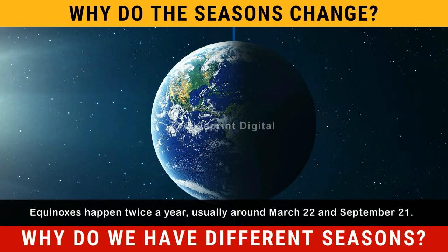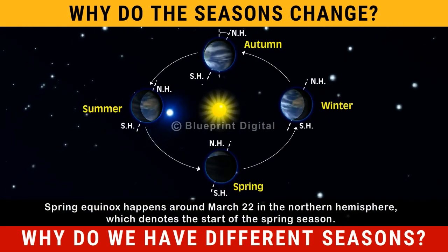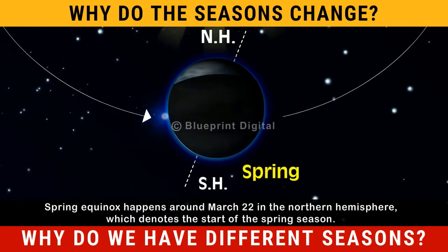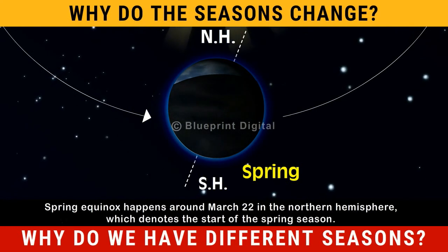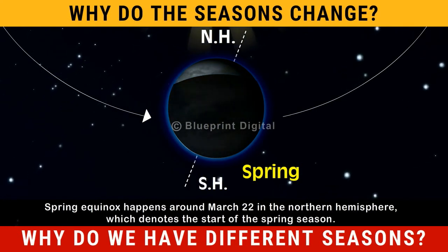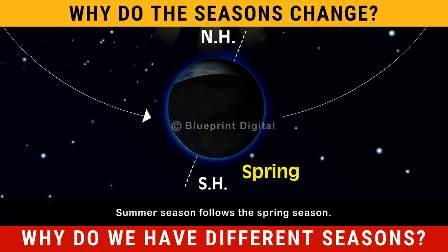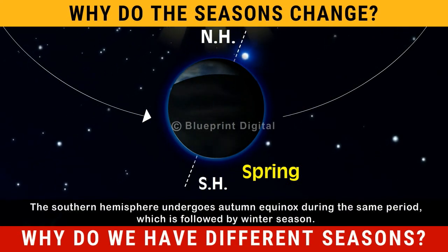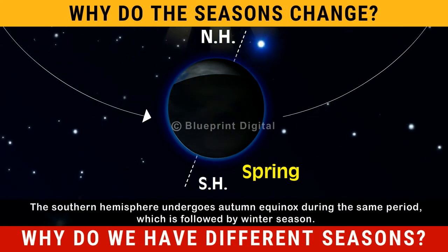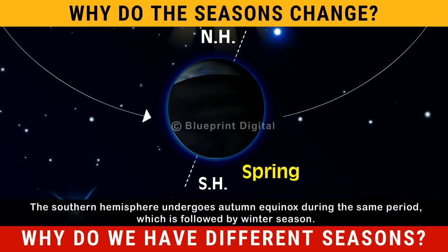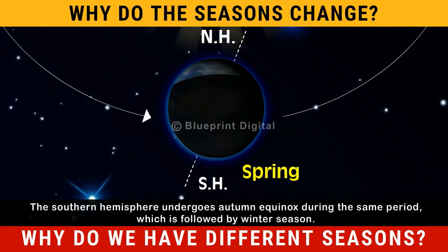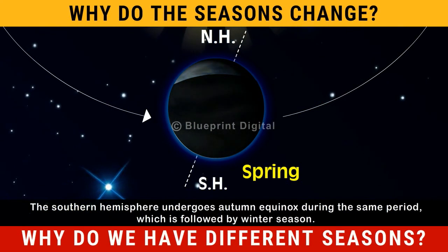Equinoxes happen twice a year, usually around March 22 and September 21. Spring equinox happens around March 22 in the Northern Hemisphere, which denotes the start of the spring season, followed by Summer season. The Southern Hemisphere undergoes Autumn equinox during the same period, which is followed by Winter season.